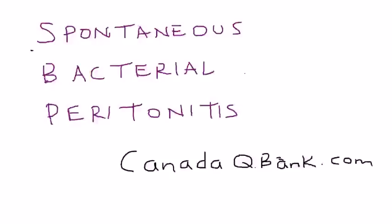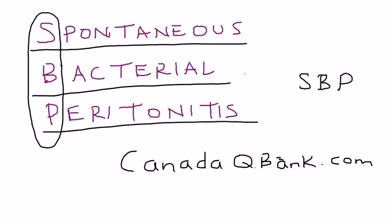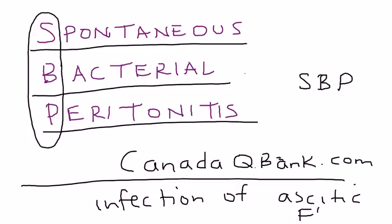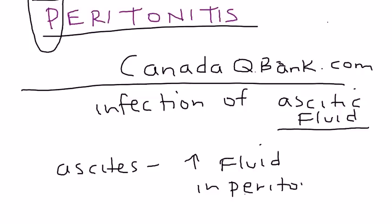We're going to discuss spontaneous bacterial peritonitis in this video, also abbreviated SBP. SBP, by definition, is an infection of the ascitic fluid that can build up. Ascites is an accumulation of fluid in the abdomen, and in particular the peritoneal cavity, which is the space in between the organs and the abdominal wall.